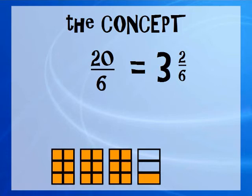Now if we were in the upper grades, we would of course take this 2 sixths and we would simplify it and our number would be 3 and 1 third. And this is what the amount is.